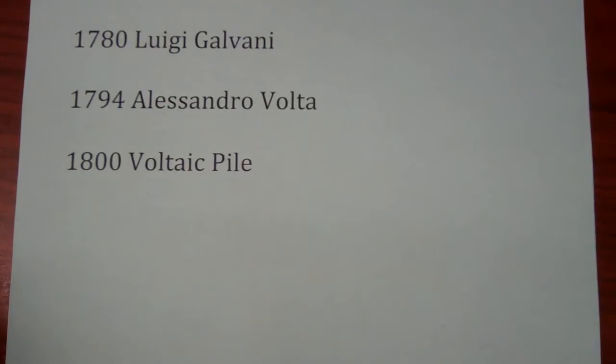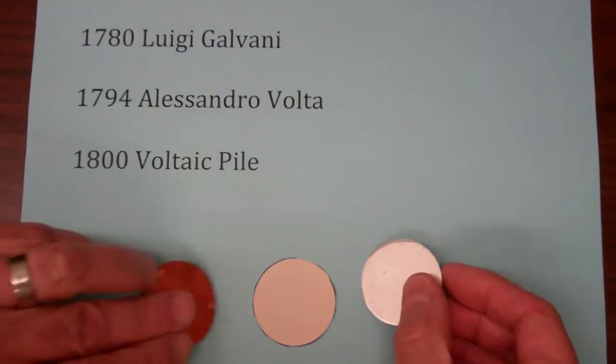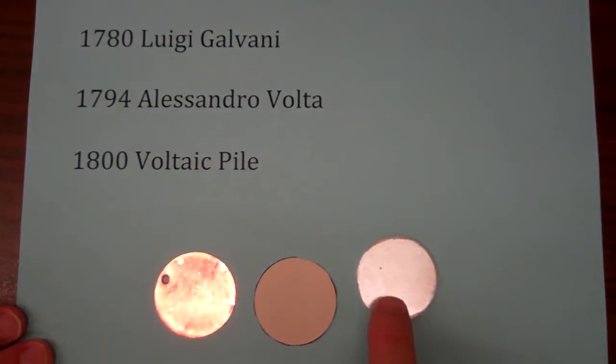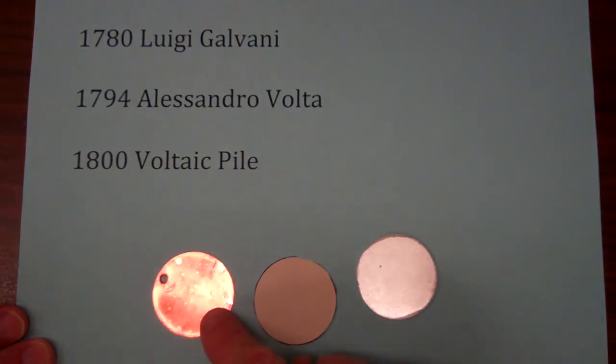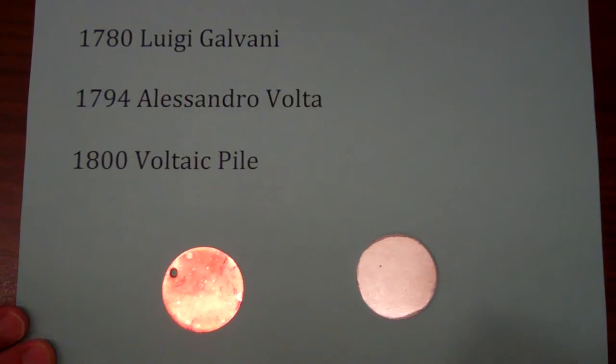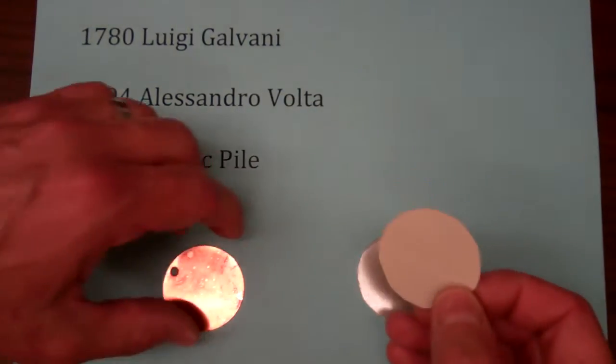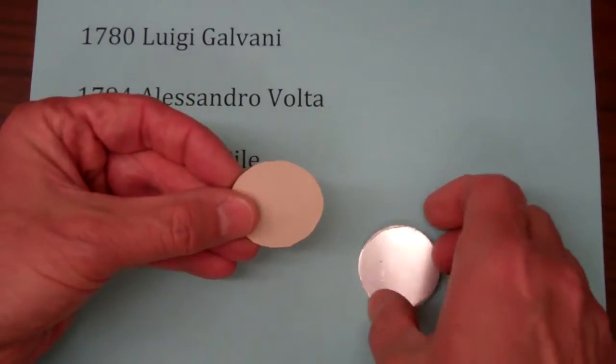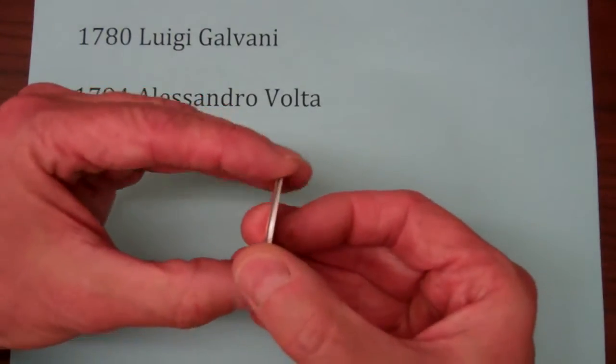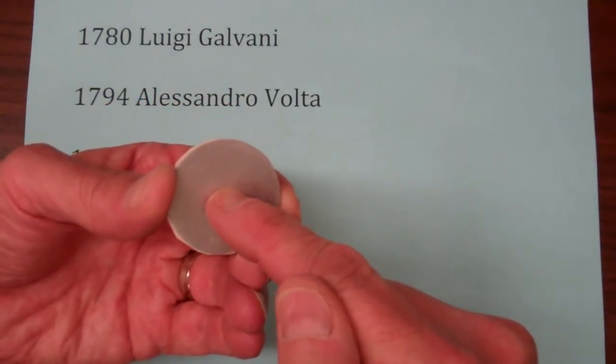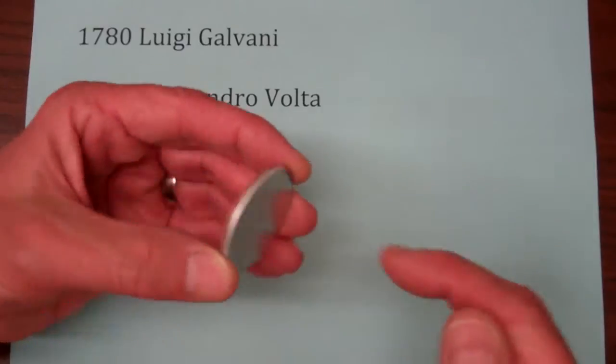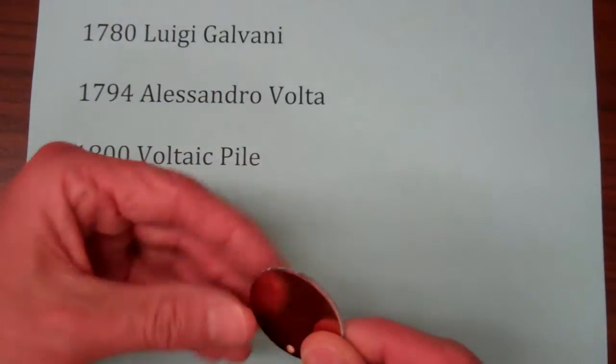Volta started to experiment. In 1794, he took a piece of zinc and a piece of copper, and then he had a piece of paper that he soaked in salt water and placed it between the copper and the zinc. He found that if he made a connection to the zinc and the copper, he could get a continuous flow of electricity.